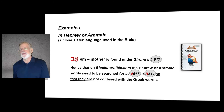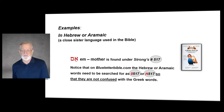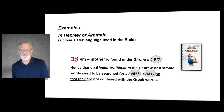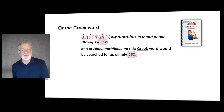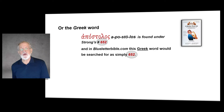An example: in Hebrew or Aramaic — which is a close sister language used in the Bible, like in the book of Daniel — the word for Mother can be found under Strong's 517. Note that in blueletterbible.com, Hebrew or Aramaic words need to be searched under 0517 or H517 so that they are not confused with Greek words. The Greek word Apostolos is found under Strong's number 652, and in blueletterbible.com this Greek word would be searched for as simply 652.